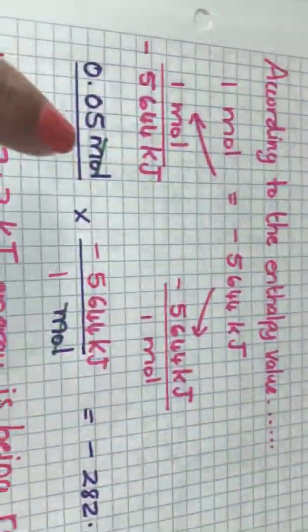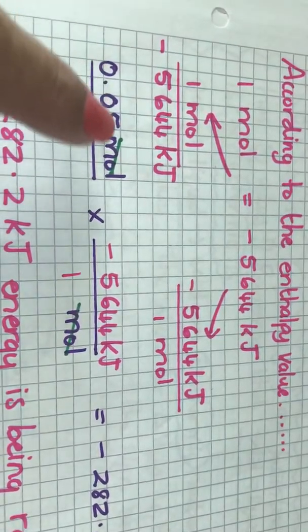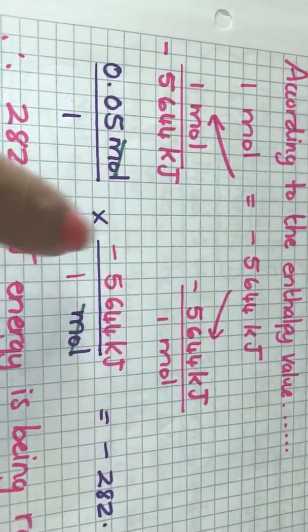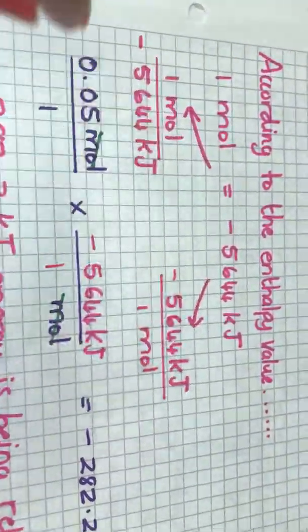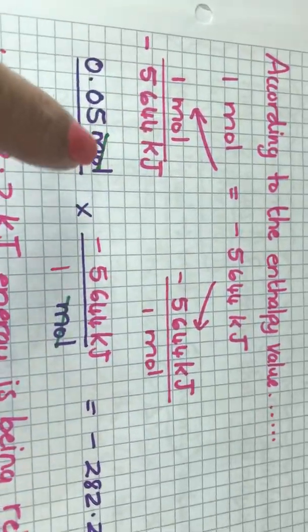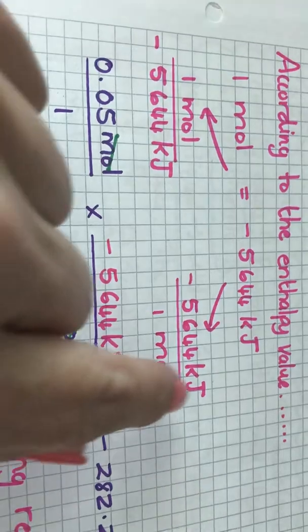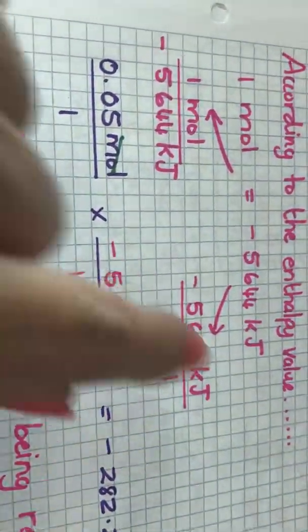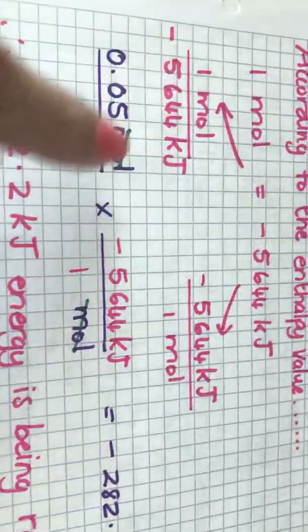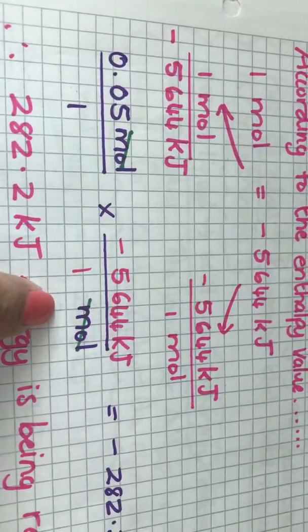So I have 0.05 mole of sugar, that's 0.05 over 1 times by, I have to choose the correct version for a conversion factor here because I have mole on the top I will write mole at the bottom here and therefore I'm going to use this conversion factor. It's the one that fits in here, this one won't fit in because it doesn't have mole at the bottom.